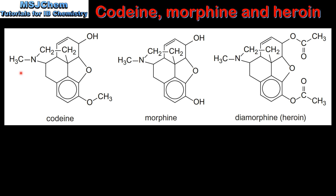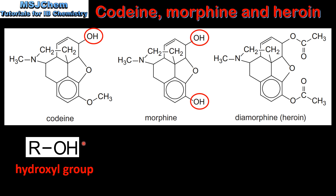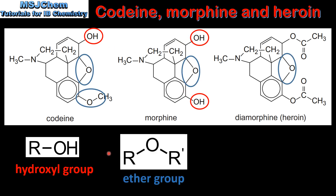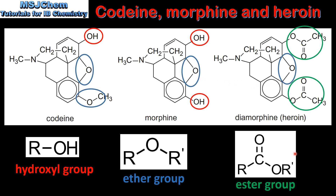Next we look at the differences in the functional groups present in each molecule. Starting with the hydroxyl group, we can see that codeine has one hydroxyl group and morphine has two hydroxyl groups. Next, the ether group — codeine has two ether groups and morphine and diamorphine both have one ether group. And finally, the ester group — diamorphine has two ester groups while morphine and codeine have none.